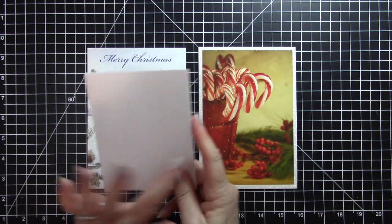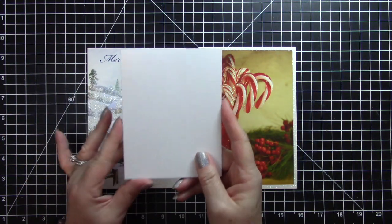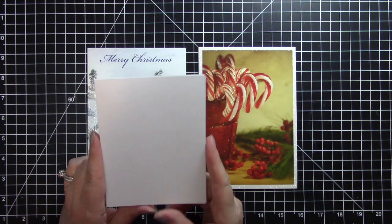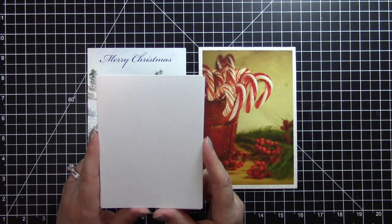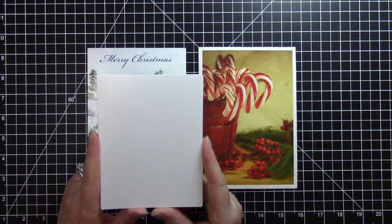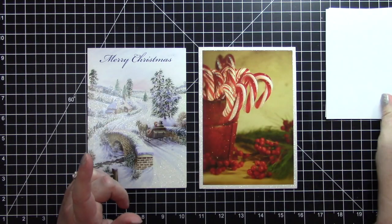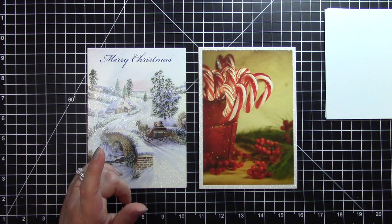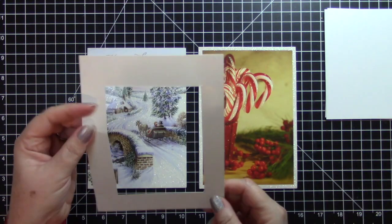An A2 card is four and a quarter by five and a half. This is the standard card size if you take a piece of eight and a half by eleven cardstock, fold it in half, and then cut that in half.